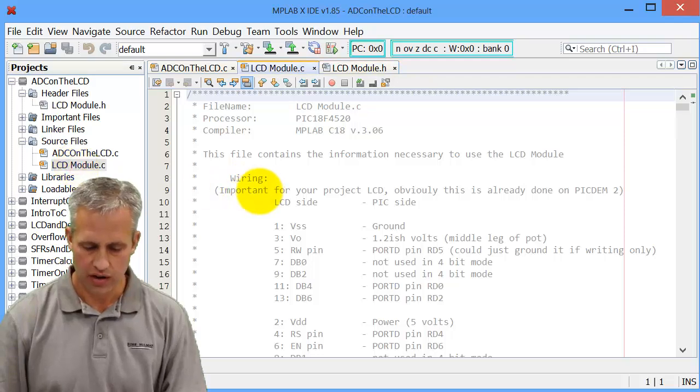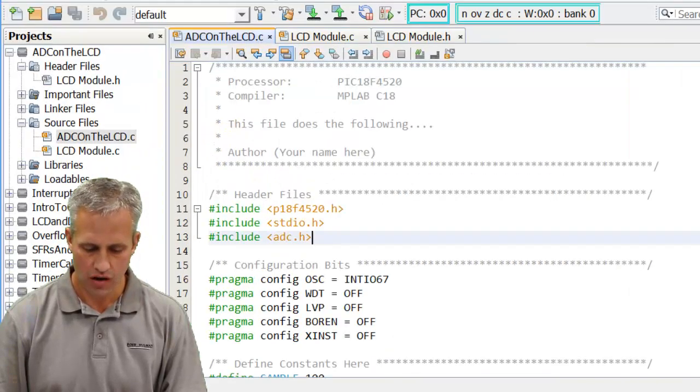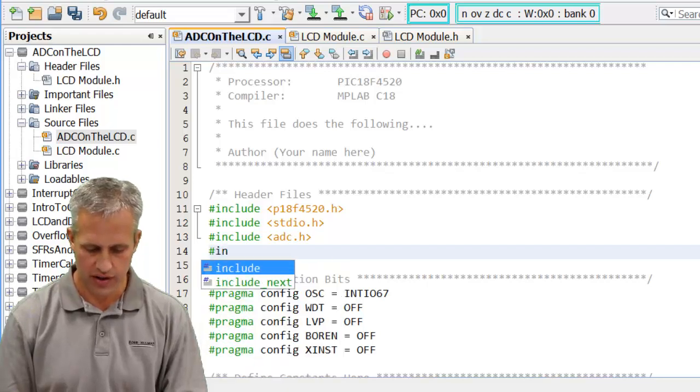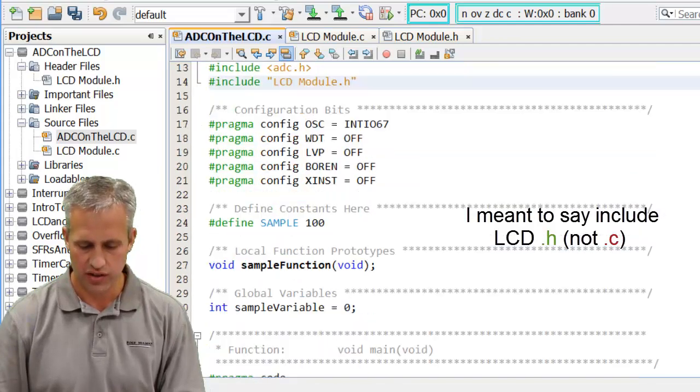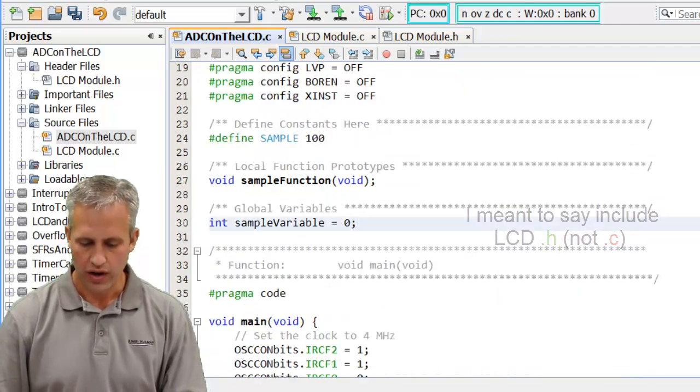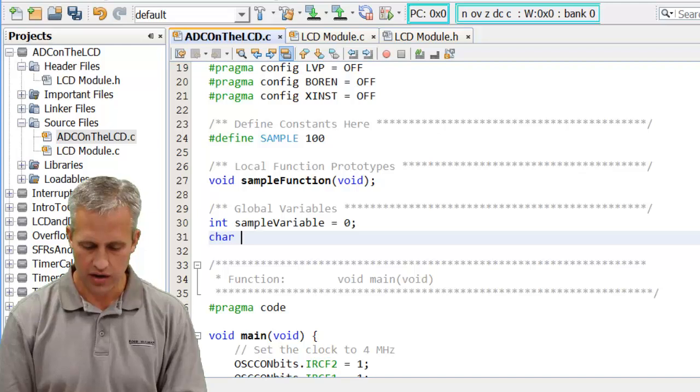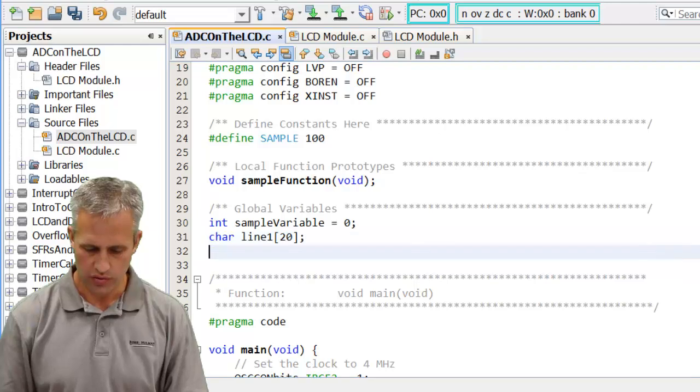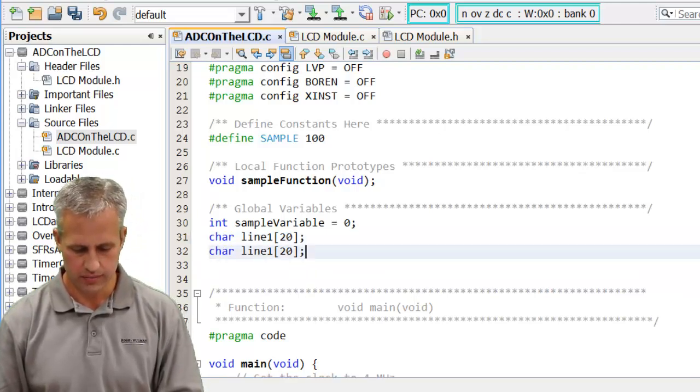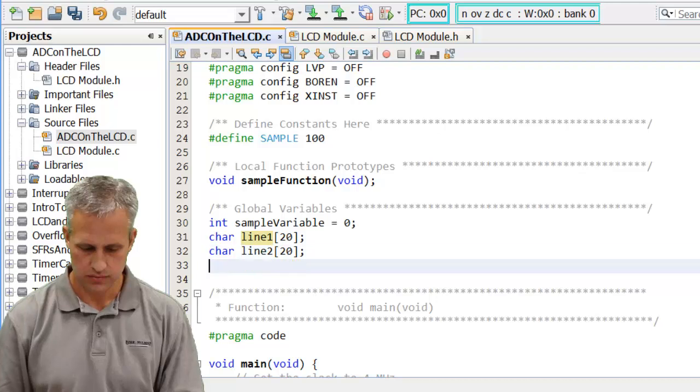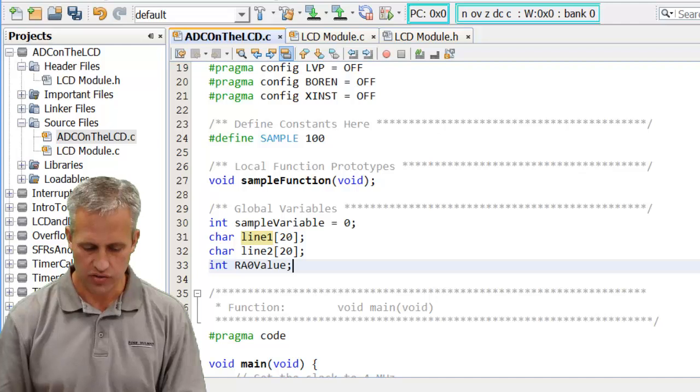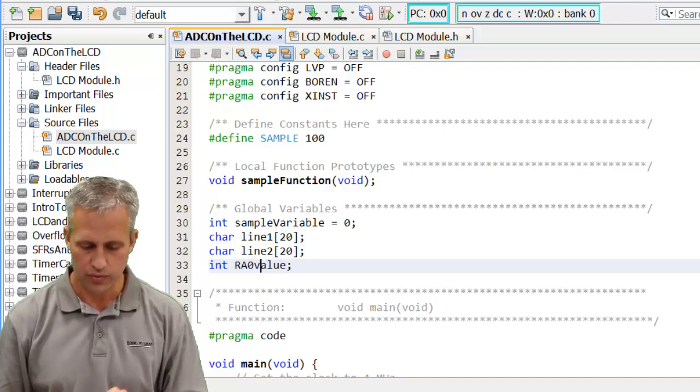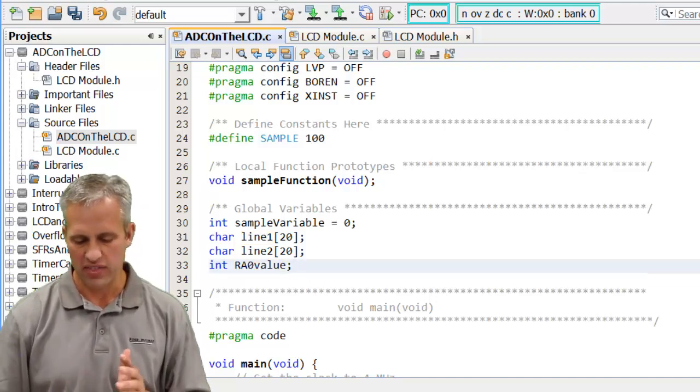Cool, so we've got our header files there: our header file and our implementation file. Then the same things we always do: include LCD module dot C. We're going to need a couple variables. We're going to need a line one and a line two eventually, so I'll just make them both character arrays with up to twenty. Then we're going to need a place to save the value, so I'm going to say RA zero value, and I'll just make that one for now.